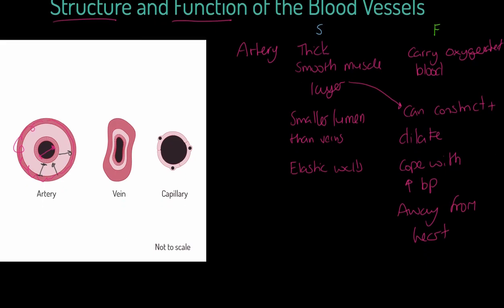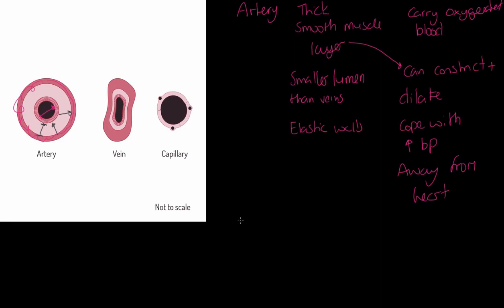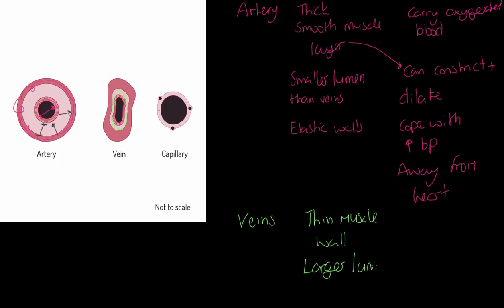Now let's talk about veins — and this is not the order the blood will pass, by the way. Blood goes from arteries to capillaries to veins. But we'll go veins after arteries. Their structure: they have a thin muscle wall — the same smooth muscle as arteries but far thinner. We could say thinner muscle walls. They also have a larger lumen, and you can see here that the lumen of a vein is greater than that of an artery.